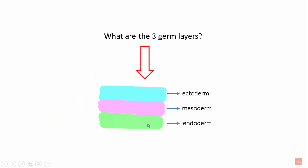The endoderm is the innermost layer. It forms the lining of the gut and other internal organs. This is the mesoderm, the middle germ layer. This forms the muscles, skeletal system, and circulatory system. This is the ectoderm, the most exterior germ layer. This forms the skin, brain, nervous system, and other external tissues.